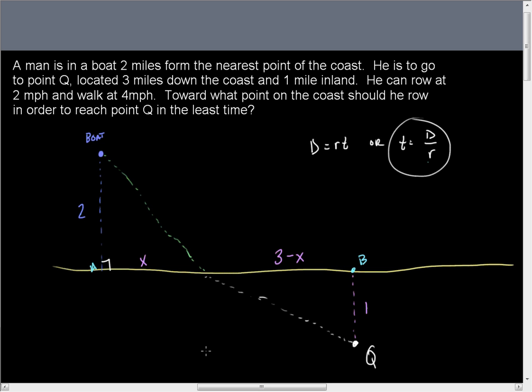I just simply read the problem. A man is in a boat two miles from the nearest point on the coast. So I drew his boat. He's two miles from the coast. That forms a right angle. He has to go to a point Q located three miles down the coast. This distance from A to B is three miles and one mile inland, which means once he gets to point B, he has to walk one mile inland at a right angle again. He can row at two miles an hour and walk at four miles an hour. Toward what point on the coast should he row in order to reach point Q in the least time?